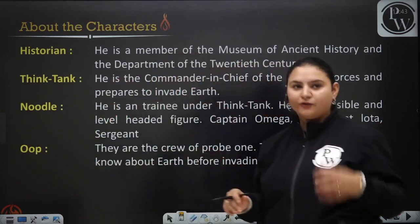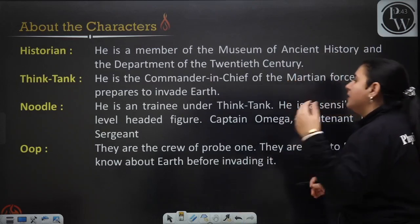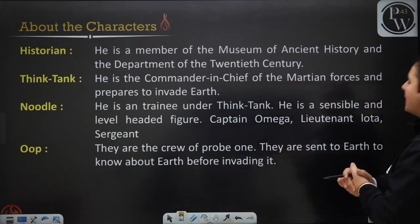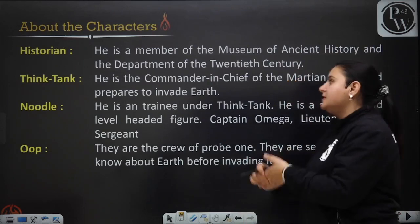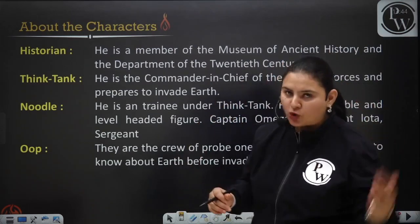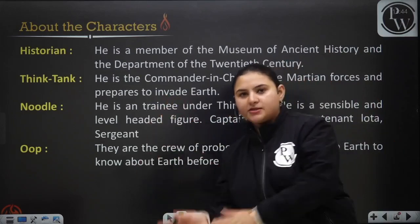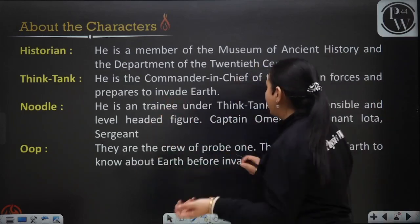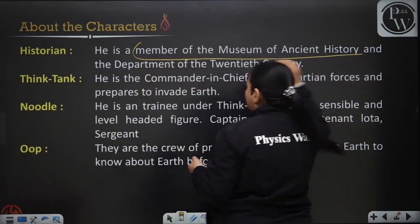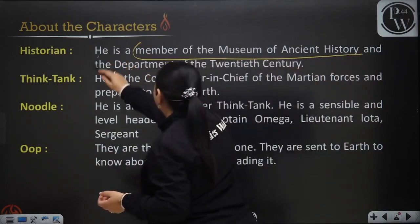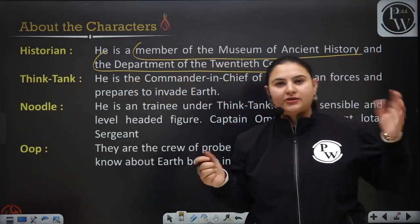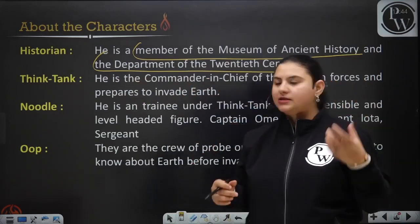Now let's meet the characters. The first character we come across is a Historian. She is a member of the Museum of Ancient History and the Department of the 20th Century. The play starts with a Historian — a person who talks about history and tells about what kind of things happened in the 20th century.